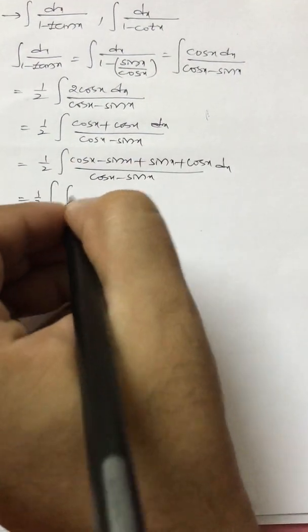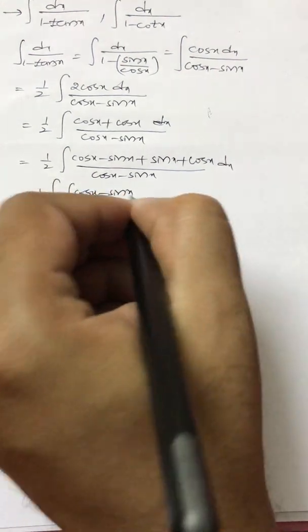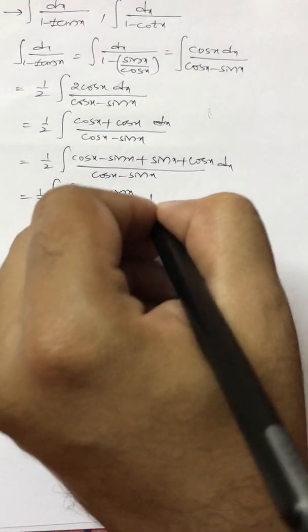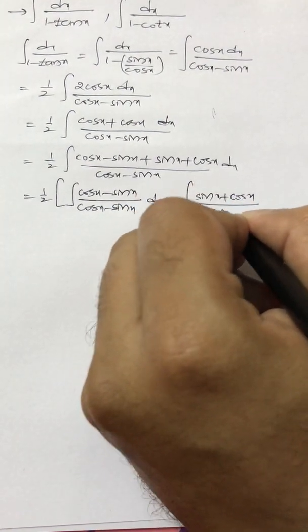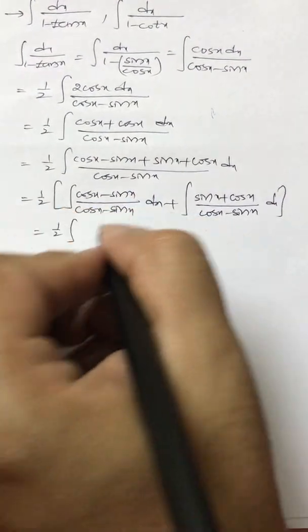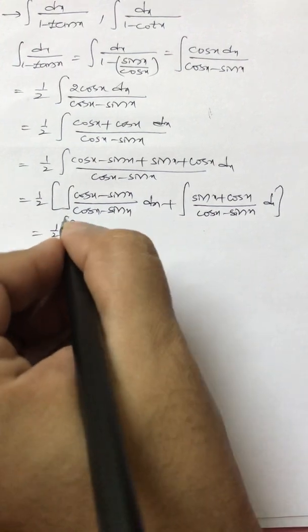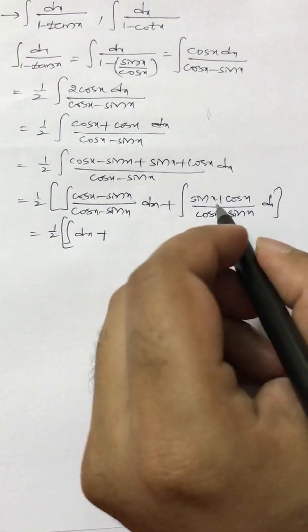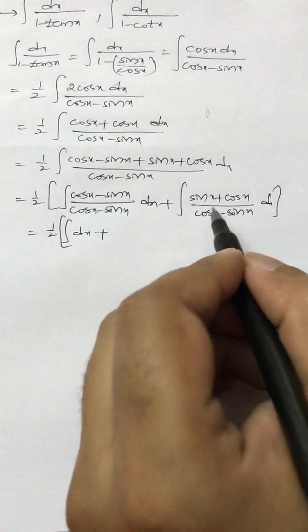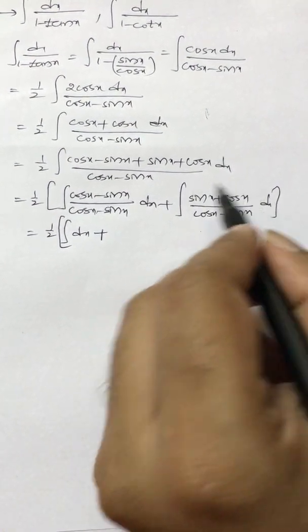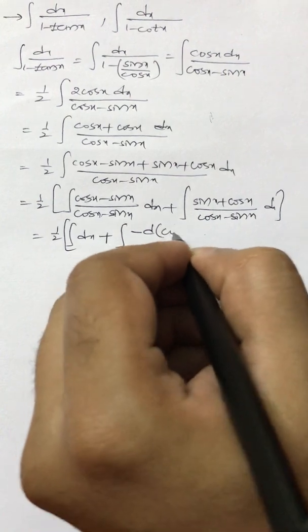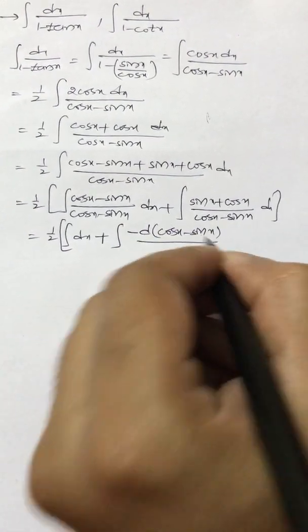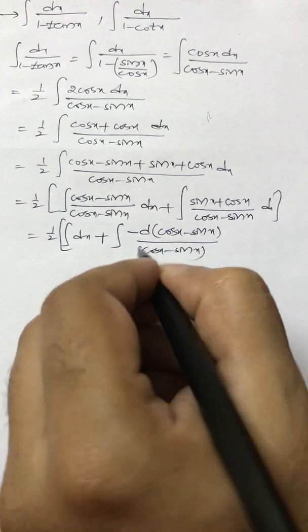This is 1 by 2 into integral of (cos x minus sine x) by (cos x minus sine x) dx, plus integral of (sin x plus cos x) by (cos x minus sine x) dx. The first fraction equals 1, so we get integral of dx. For the second integral, we note that the derivative of (cos x minus sine x) is minus sine x minus cos x, so we write minus of the derivative of (cos x minus sine x) by (cos x minus sine x).